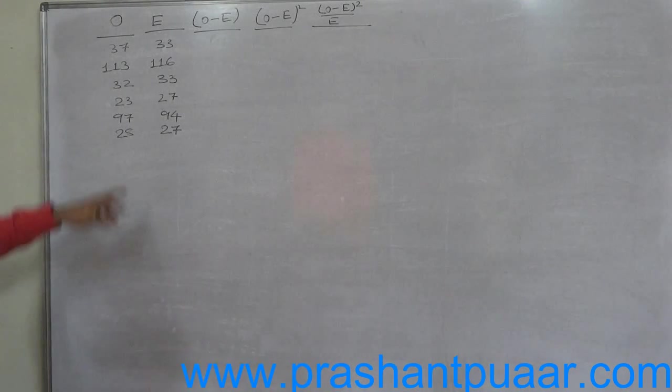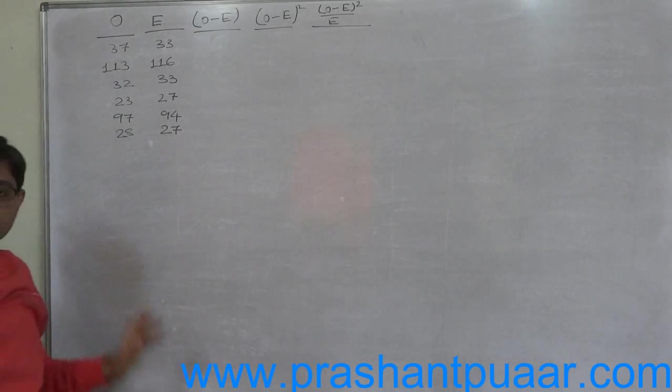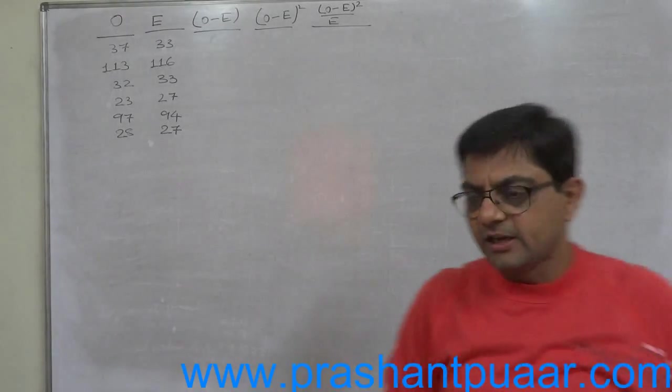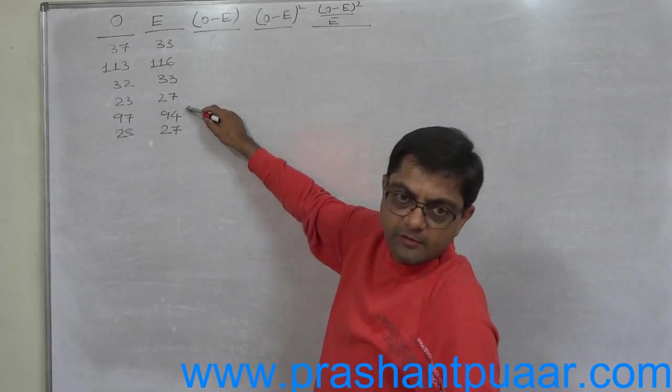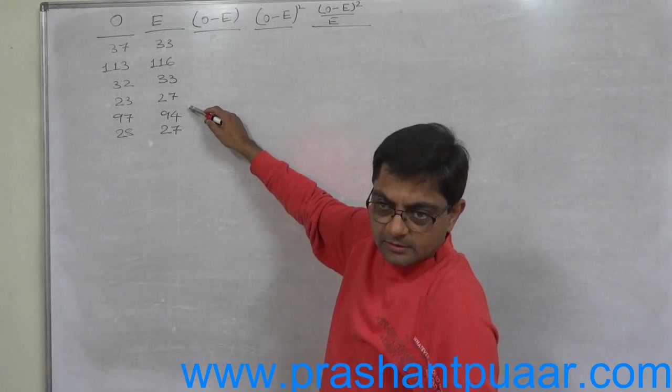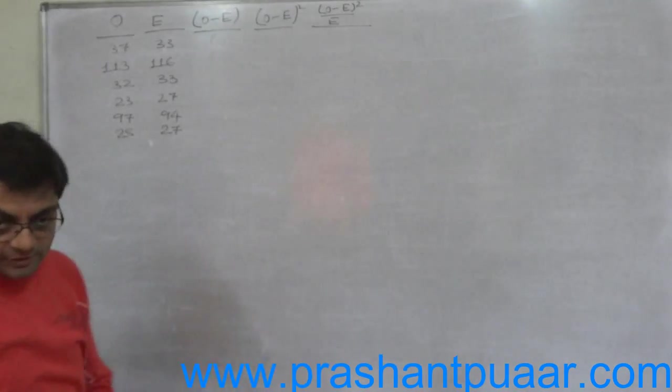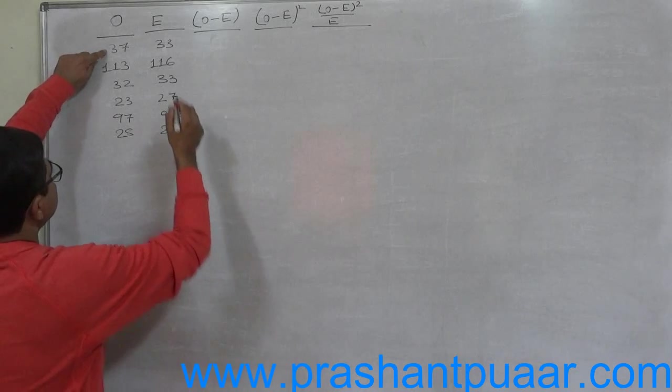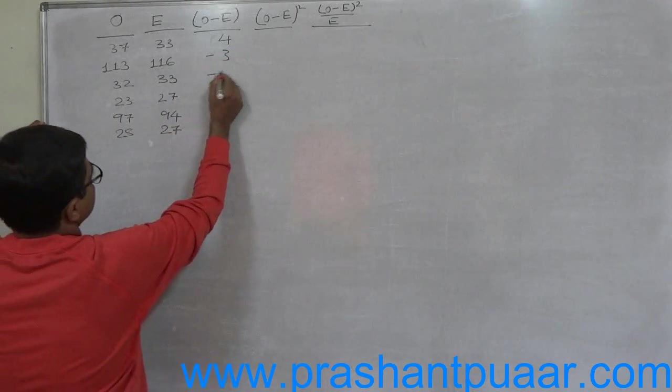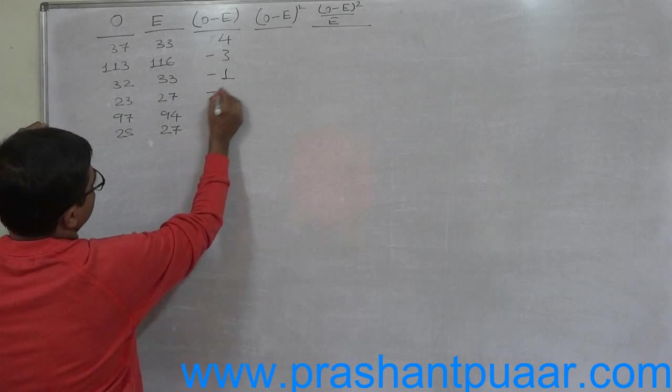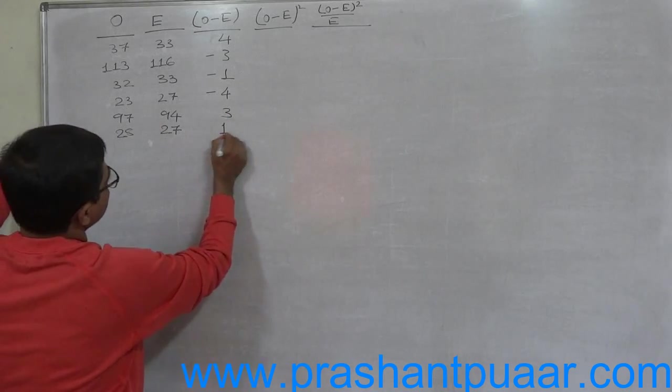Now, first we have to observe: is any of the expected frequency less than 5? No. If no, then there is no problem. But if any of the expected frequency is less than 5, we should cancel the frequency and merge it with the other greater frequency which is greater than 5, and the similar process should be done with the observed frequencies. Now, O minus E: 37 minus 33 is 4, 113 minus 116 is minus 3, 32 minus 33 is minus 1, 23 minus 27 is minus 4, 97 minus 94 is 3, and 28 minus 27 is 1.